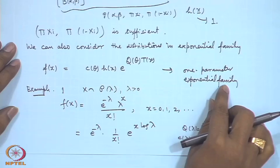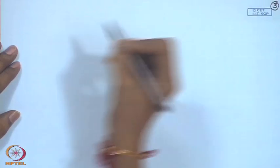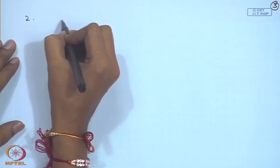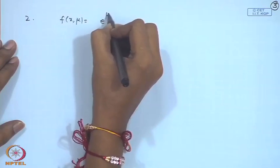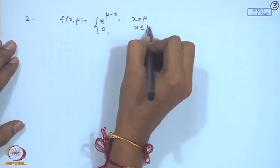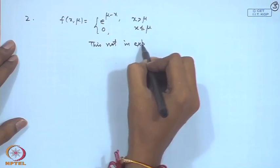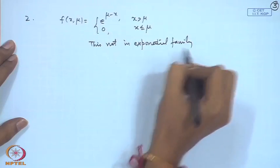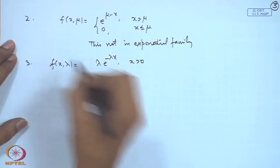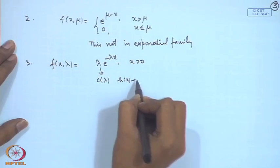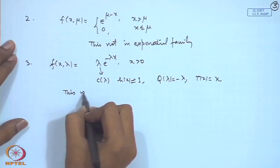Note that this exponential family is different from the exponential density. For example, f(x; μ) = e^(μ−x) for x > μ is not an exponential family. However, f(x; λ) = λ·e^(−λx) can be written with c(λ) = λ, h(x) = 1, q(λ) = −λ, and T(x) = x, so this is again a one-parameter exponential family.